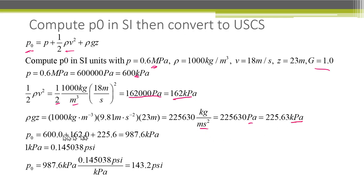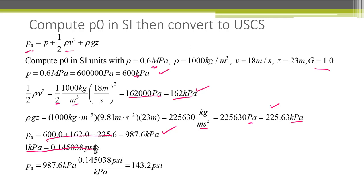We simply add those together: 600 plus 162 plus 225.63, giving us 987 kPa. We can look up the conversion between kPa and psi: there are 0.145 psi per kilopascal. Multiplying gives 143.2 psi. That was fairly straightforward using all metric units until the end.